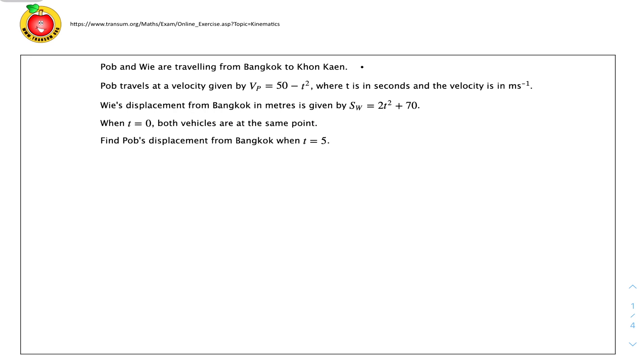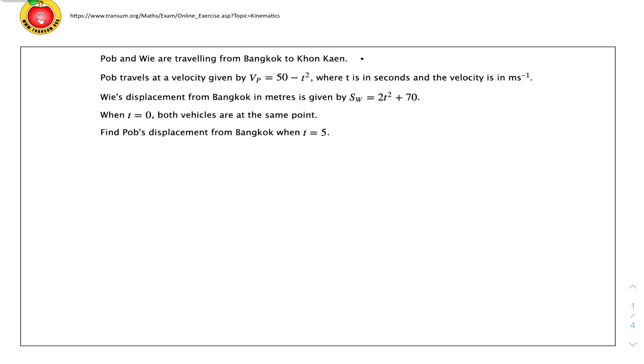So these two people are traveling from Bangkok to Khon Kaen. Pop travels at velocity given by vp equals 50 minus t squared, where t is in seconds and velocity is in meters per second. Wee's displacement from Bangkok in meters is given by sw equals 2t squared plus 70. When t equals 0, both vehicles are at the same point, which is very important. We need to find Pop's displacement from Bangkok when t equals 5.